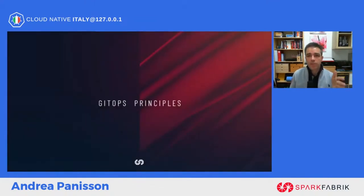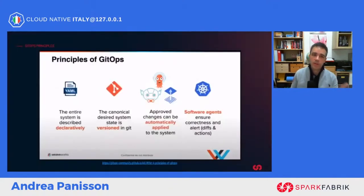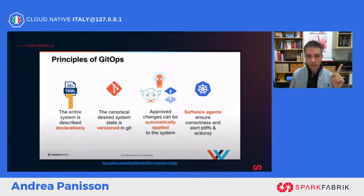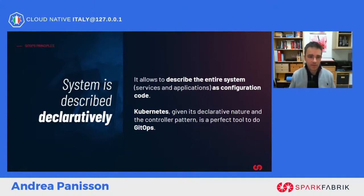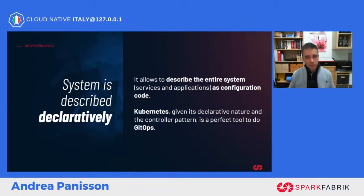GitOps is based on four principles. The first principle states that the entire system must be described declaratively. When I describe a system declaratively, I am describing exactly what the desired state of my application should be — for example, a YAML file declaring an Nginx web server with at least three replicas. That file completely describes my application. Kubernetes, given its declarative nature and controller model, is a perfect tool for GitOps.